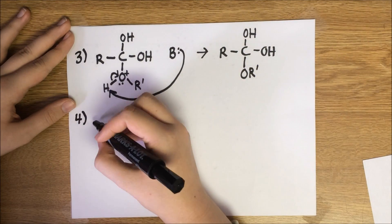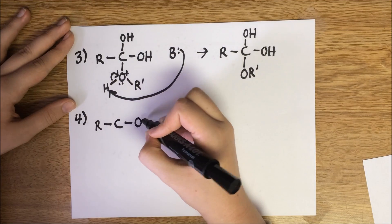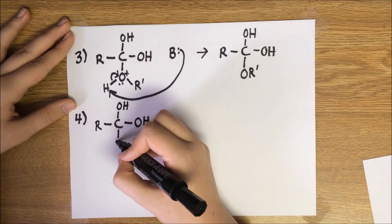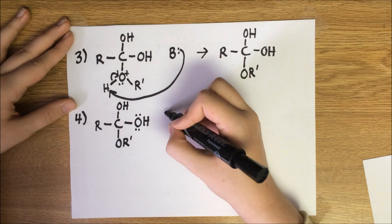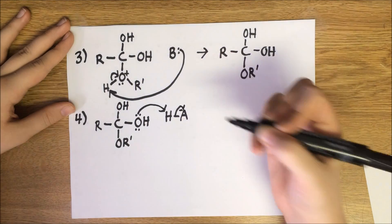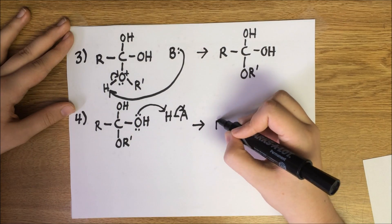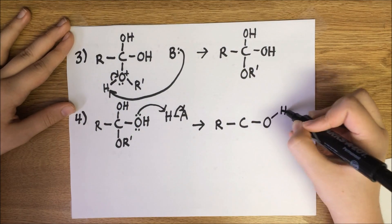For step 4, one of the alcohol oxygens on the molecule will be protonated by an acid. Similar to step 1, the oxygen electrons attack the acidic hydrogen and leave the acid with a pair of electrons. Again, we have an oxonium ion.